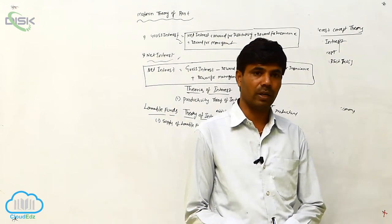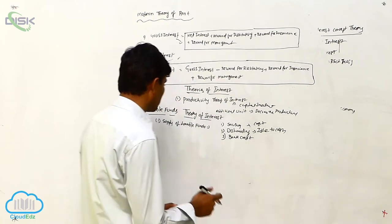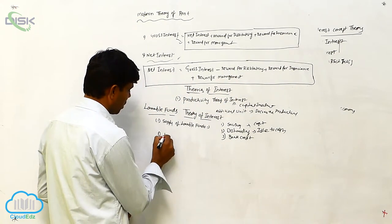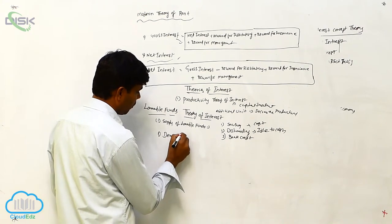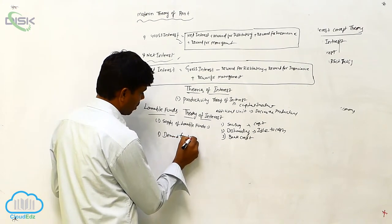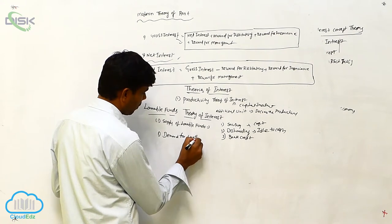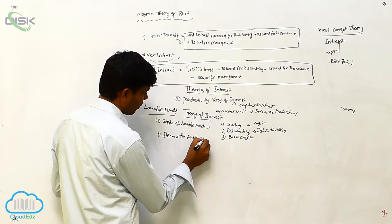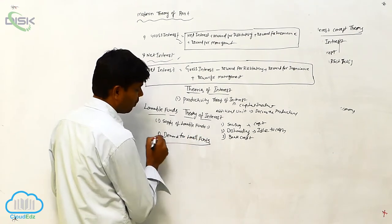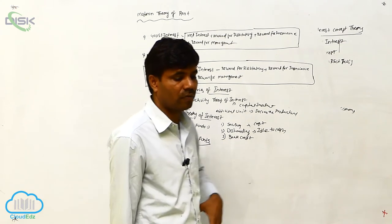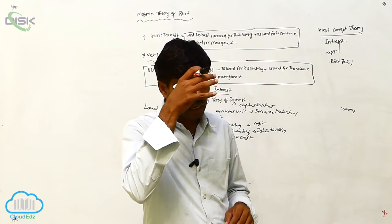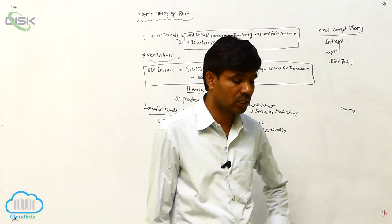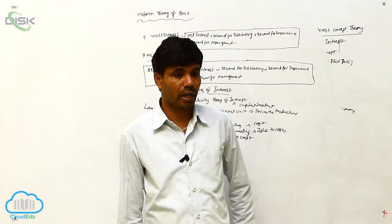The next is demand for loanable funds. Supply is over. Demand for loanable funds. Demand for the loanable funds is for capital goods and services, homogeneous and everything also.